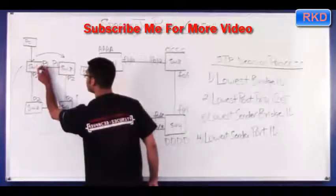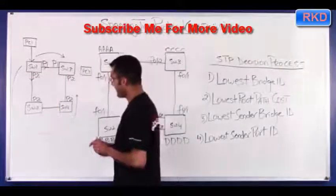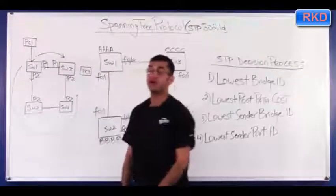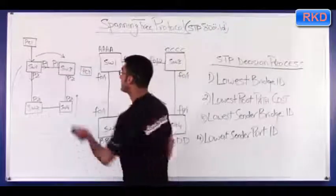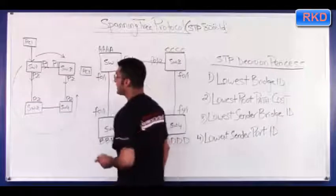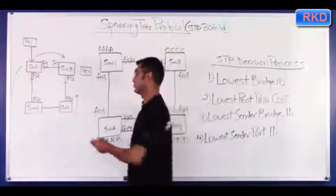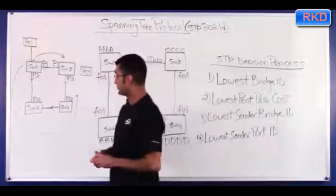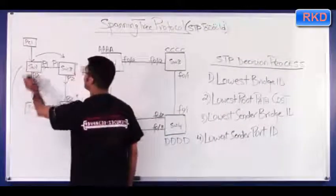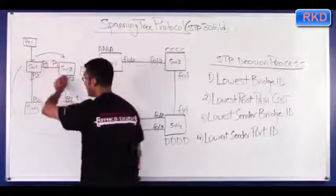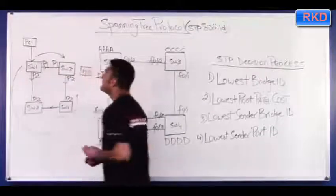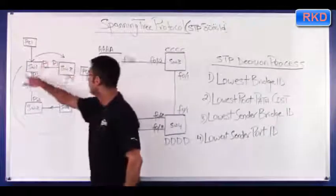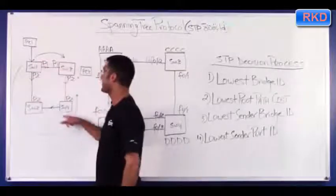The switch floods the frame out port 1 and port 2. The frame moving in the clockwise direction gets to switch 3. Switch 3 also does not know where PC3 is, so it floods it out port 2. The frame gets to switch 4, which also doesn't know where PC3 is, so switch 4 floods it out to switch 2. The frame gets to switch 2, which floods it back to switch 1, and this process continues — the frame keeps looping in a clockwise direction. The same thing happens to the frame sent out switch 1 port 2, looping between switches 2, 4, 3, and 1 in a counterclockwise direction.